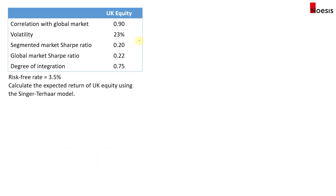Let's look at one example. We have UK equity with a correlation with the global market of 0.9. Volatility of UK equity is 23%, with a segmented market Sharpe ratio of 0.2. The global market Sharpe ratio is 0.22. The degree of integration is 75%, which means the degree of segmentation is 25%. The risk-free rate is 3.5%. Calculate the expected return of UK equity using the Singer-Terhaar model.